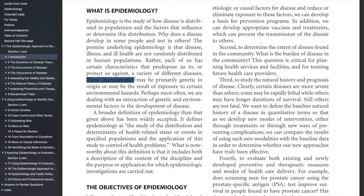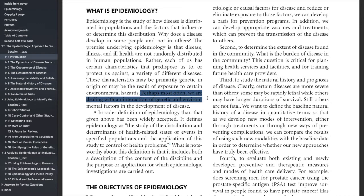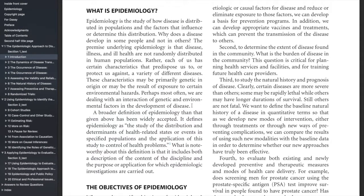These characteristics may be primarily genetic in origin — which is inherited — or may be the result of exposure to certain environmental hazards. Perhaps more often we are dealing with the interaction of genetic and environmental factors in the development of diseases. So it could be our own genetics, our genes, or it could be due to the environment we are living in, like exposure to environmental hazards.